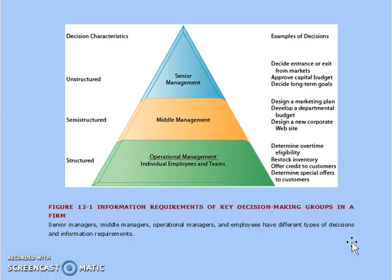Whereas the topmost strategic level — senior management — has to take unstructured, uncommon decisions. For example: deciding entrance or exit from markets, approving capital budgets, and deciding long-term goals.